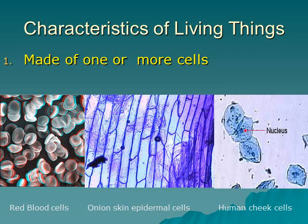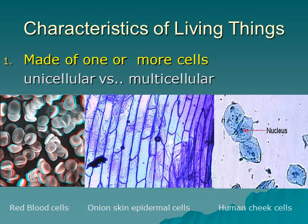The first characteristic is that in order to be living, something needs to be made of one or more cells. On this slide you can see blood cells, onion skin epidermal cells, and human cheek cells. Blood cells are the smallest cells in the human body — they're so small they don't even have a nucleus. Plant cells like the onion skin show a structure that indicates something is living, and here we have the nucleus of a cheek cell.